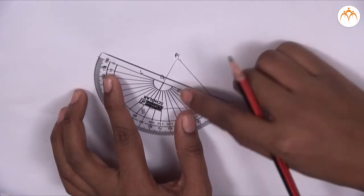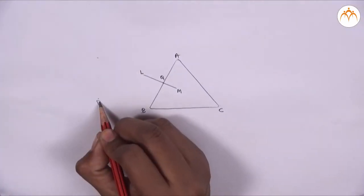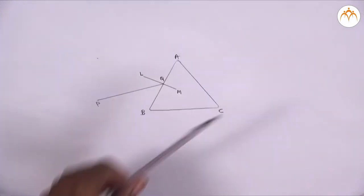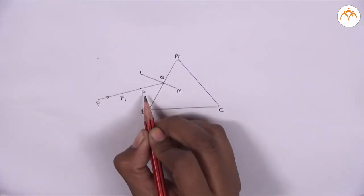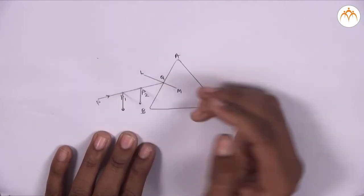Draw ray PQ making an angle of 30 degrees with the normal. Fix two pins P1 and P2 on ray PQ. We place the prism back on ABC.